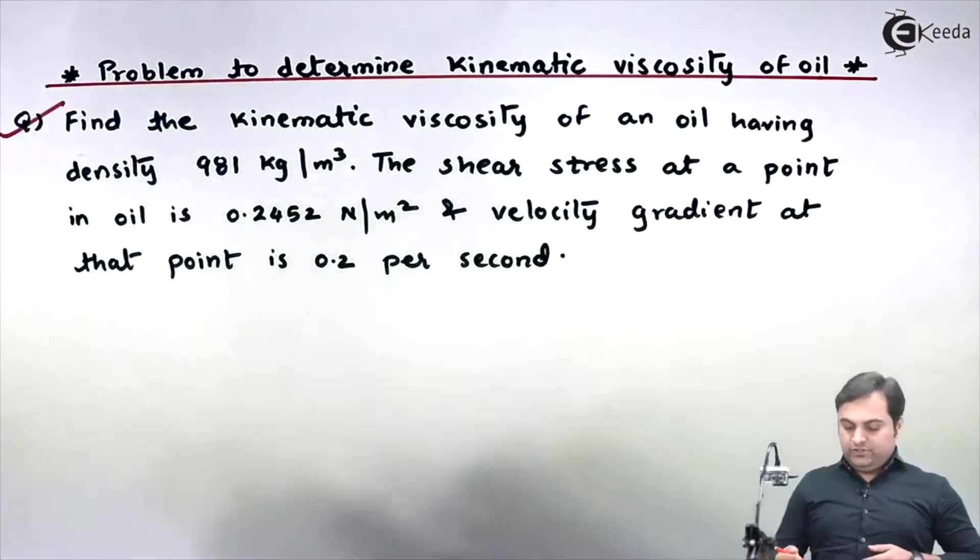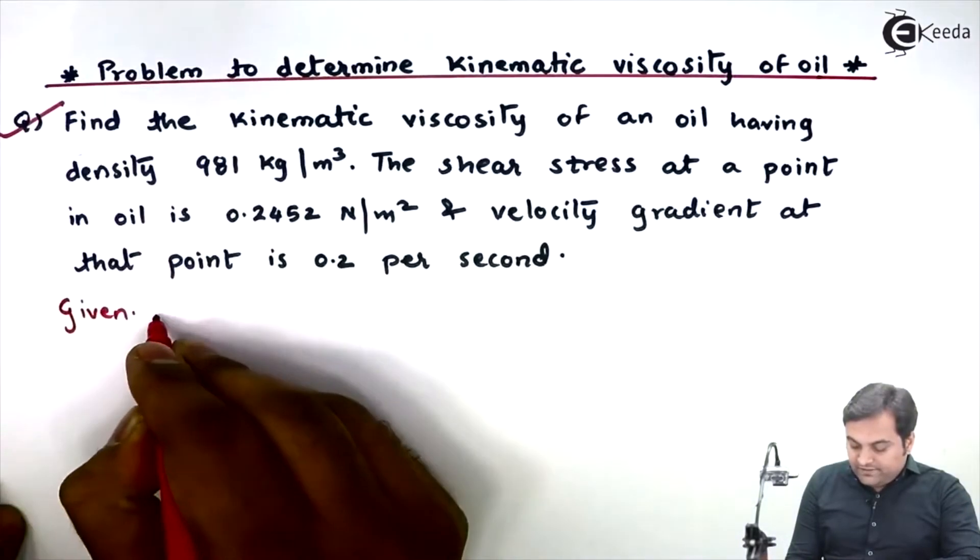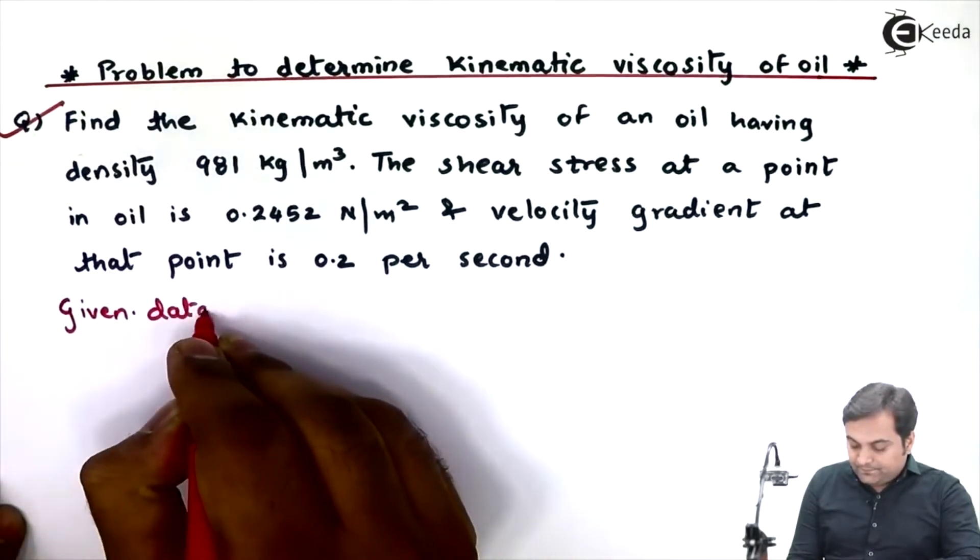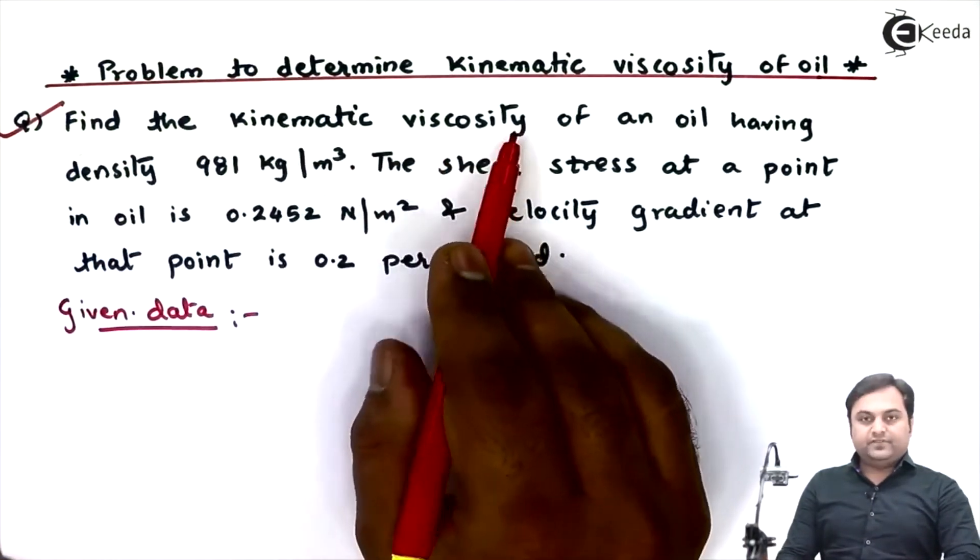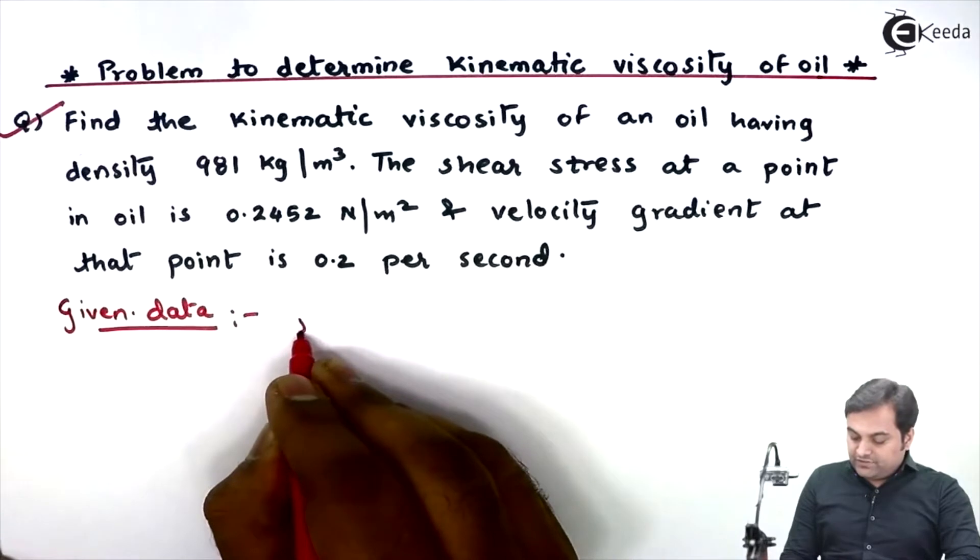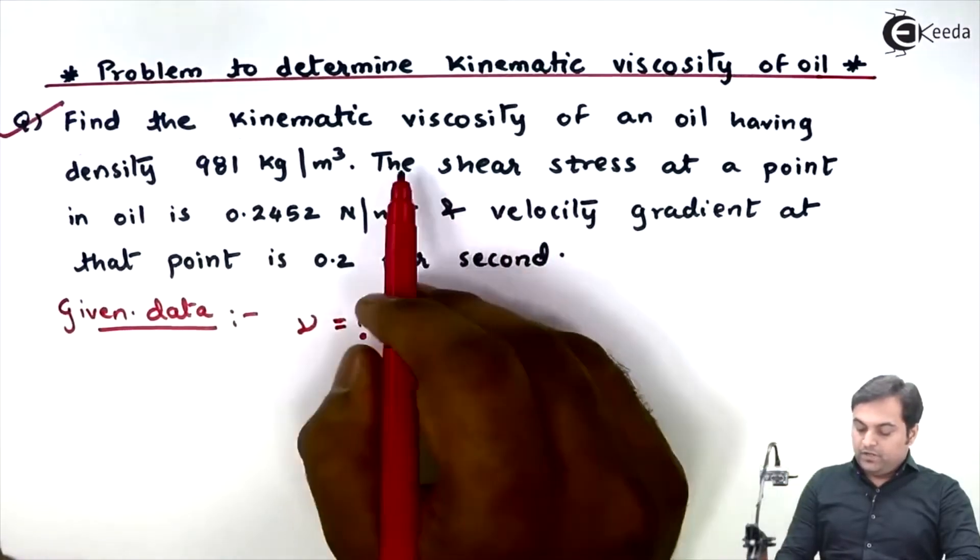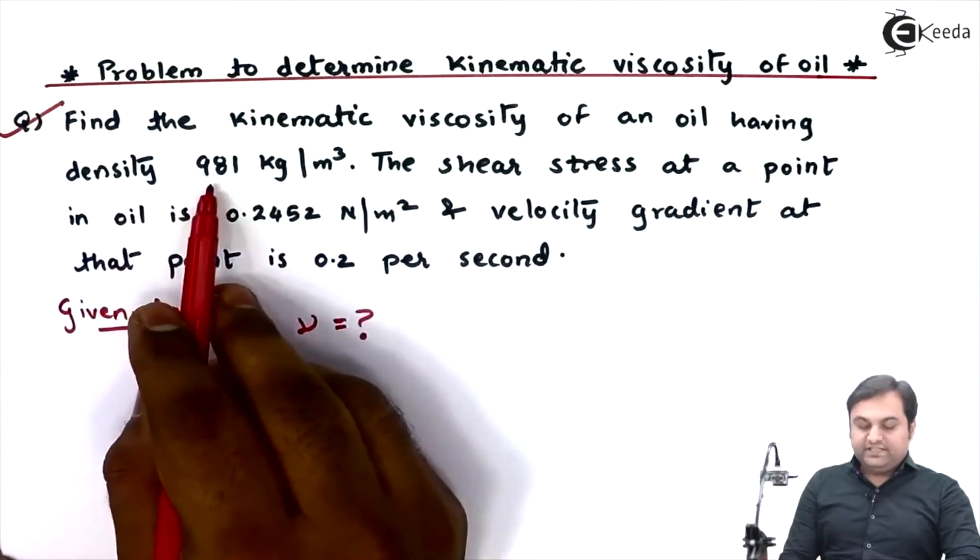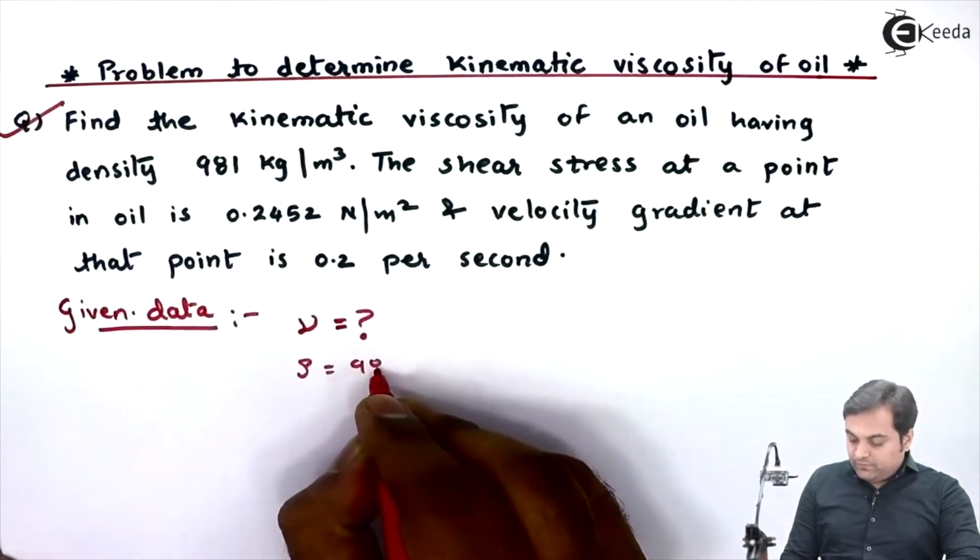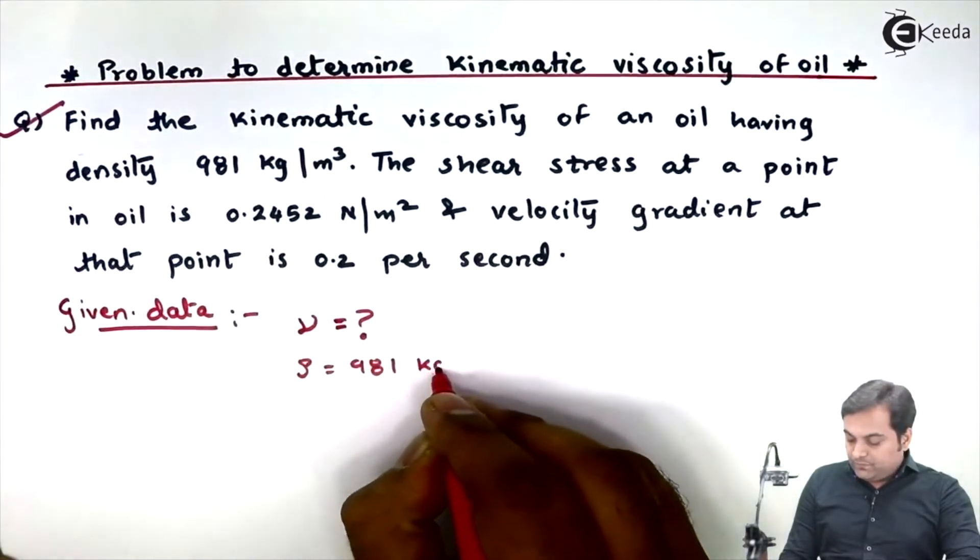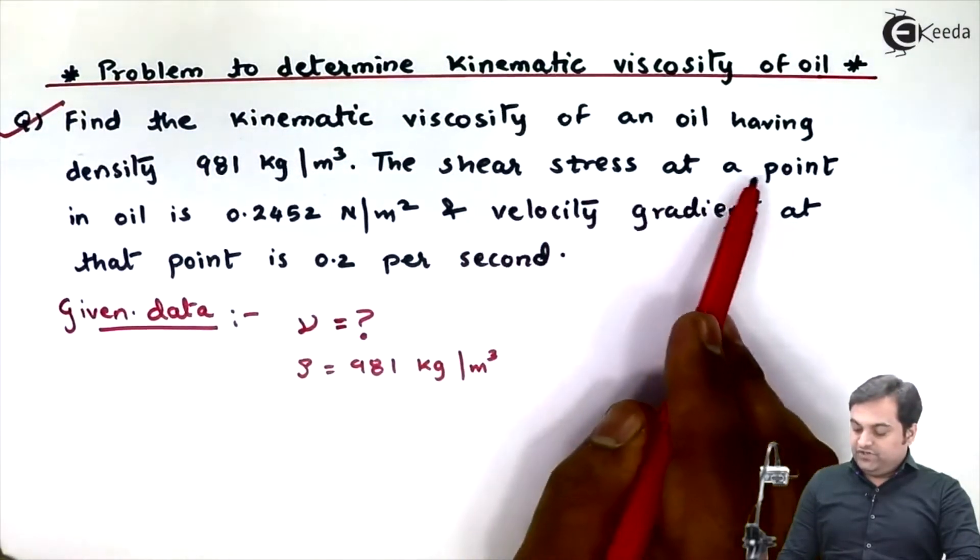Let us start this problem by writing the data. In given data, find the kinematic viscosity, denoted by nu, of an oil having density rho equals 981 kg per meter cube.